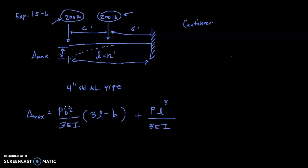So P is 200 pounds, B is 6 feet, E we're dealing with steel here. So for any type of steel except for stainless according to our textbook if we look in appendix G, we'll see that the modulus of elasticity is 30,000 KSI. I well we have a four inch standard weight pipe so we need to look in appendix B. So I'm looking in appendix B and the I value for a four inch standard weight steel pipe is 6.82 inches to the fourth.